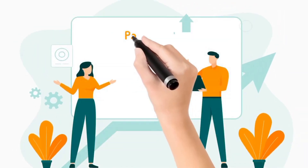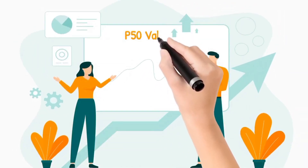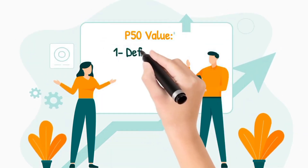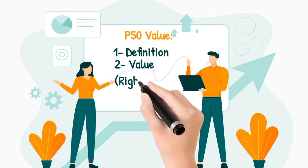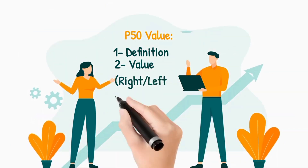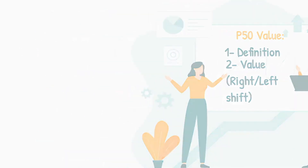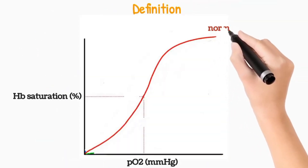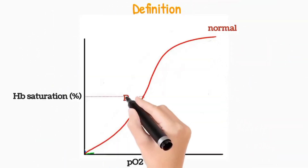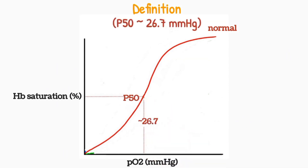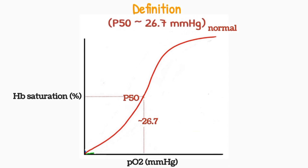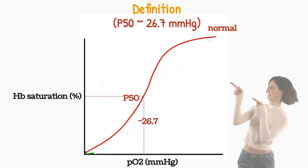Now we will discuss the P50 value. We will learn the definition and concept in detail. We will also see the change in P50 value in case of shifting of the oxygen hemoglobin curve either towards right or towards left. In the normal oxygen hemoglobin dissociation curve, the P50 value is 26.7 mmHg. This means that the partial pressure of oxygen at which hemoglobin is 50% saturated is 26.7 mmHg.